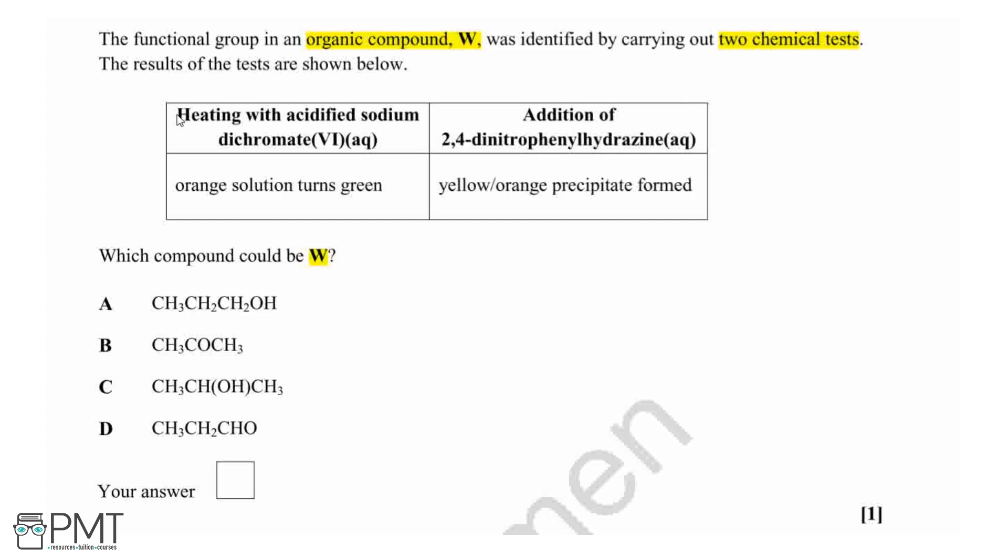Our first test is heating with acidified sodium dichromate. This is an oxidizing agent which can be used to oxidize primary and secondary alcohols or aldehydes. And our second test is the addition of...